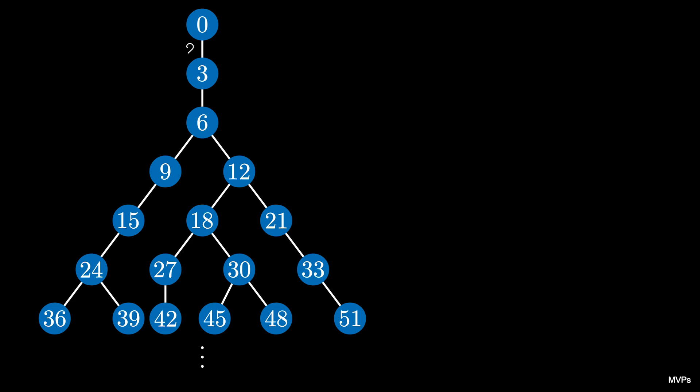After that, we can label the edges in a cyclic fashion using the numbers 2, 1, 0 repetitively. Again, we move from top to bottom and left to right, so that we continually see 2, 1, 0, 2, 1, 0, 2, 1, 0, and so on.